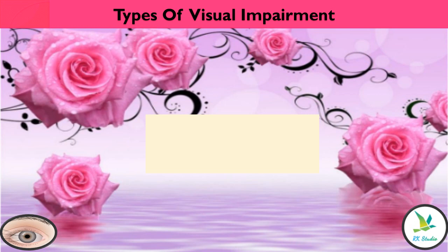Types of visual impairment: low vision and blindness.